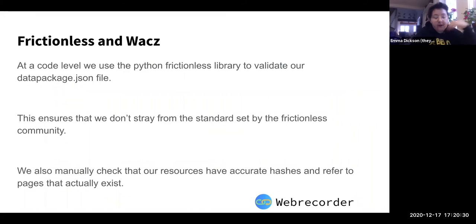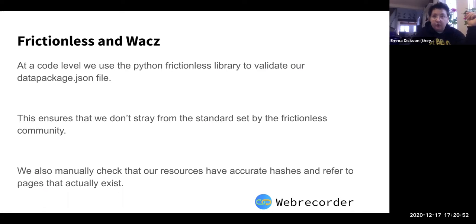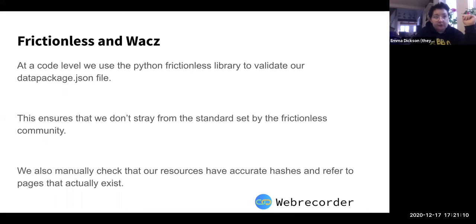At the code level we're using the Python Frictionless library to validate our datapackage.json file — we don't want to stray from the standard the community has set. There's a validate function in WACZ where you can validate an existing WACZ to see if it's formatted correctly, using the validate functionality from the Frictionless library. We also manually check that our resources have accurate hashes and refer to pages that actually exist.